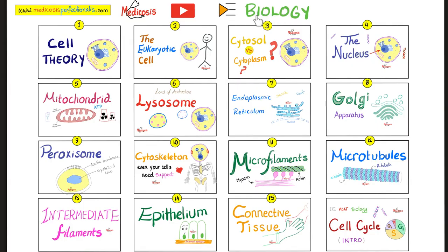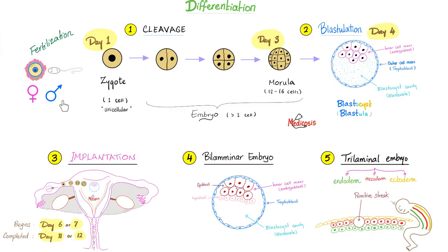Please watch these videos in order. After fertilization, day one you have the zygote and then day three you have the morula. About day four you get the blastocyst or the blastula. Next, between days six and seven you start the implantation. Then you have a bilaminar embryo — two layers — and then the trilaminar embryo with three layers: endoderm, mesoderm, ectoderm.